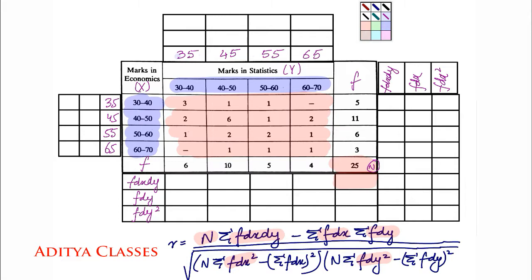As these values are large, we take a reference point — let us take 45 as the assumed mean for both x and y. It is not necessary to take the same reference points. With 45 as reference: 45 minus 45 = 0, 55 minus 45 = 10, 65 minus 45 = 20, and 35 minus 45 = minus 10. Dividing all deviations by 10 gives dy values of minus 1, 0, 1, and 2. Similarly dx values are minus 1, 0, 1, and 2.